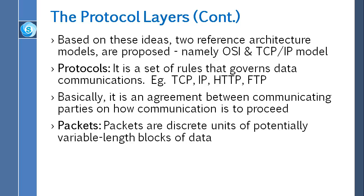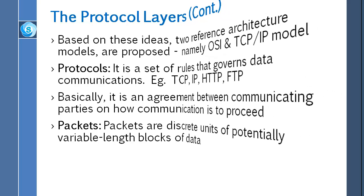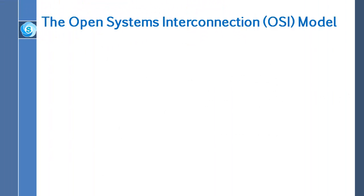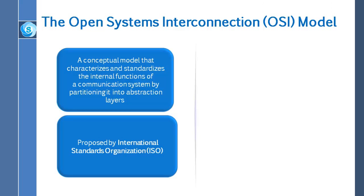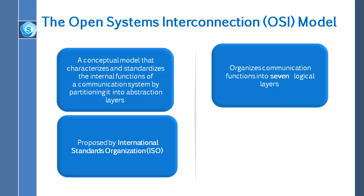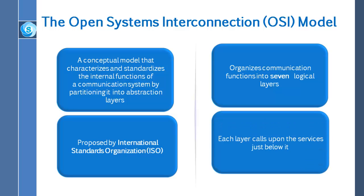Now let's look at the OSI model. OSI stands for the Open Systems Interconnection Model. It is a conceptual model that characterizes and standardizes the internal functions of a communication system by partitioning it into abstraction layers. It was proposed by the International Standards Organization. The model organizes communication functions into seven logical layers. A layer serves the layer above it and is served by the layer below it.